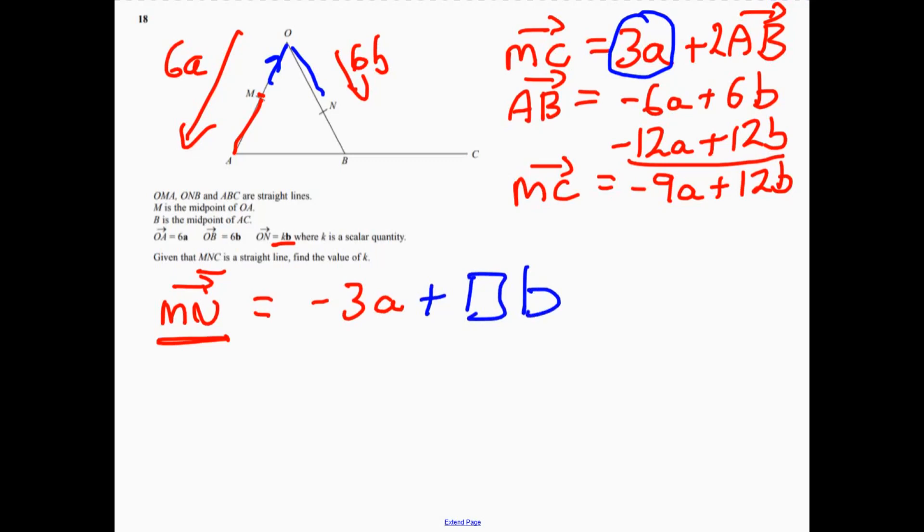Now, we know, remember, that MC is equal to minus 9a plus 12b. Well, we know they're on a straight line. So therefore, this second one... If you think about the scalar, the second one can be written like this.